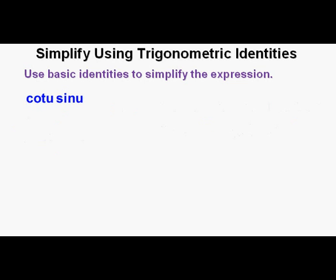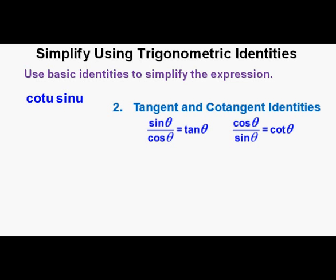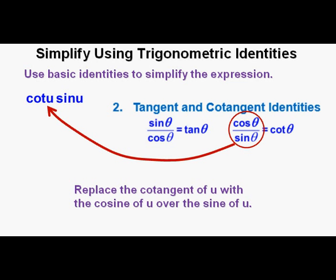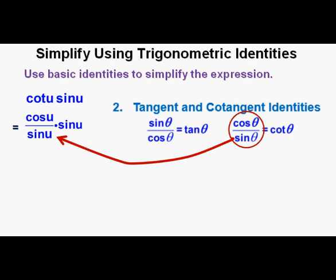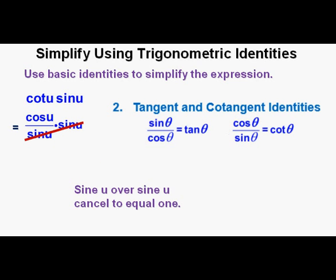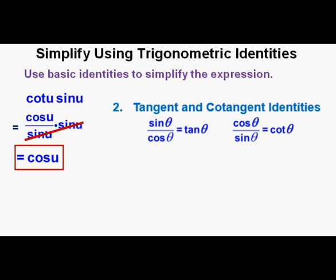Next problem. Use basic identities to simplify the expression: cotangent u times sine u. The basic strategy is to convert everything we can into sine and cosine and see if we can simplify from there. We go to our cotangent identity and replace cotangent u with cosine u over sine u. We now have cosine u over sine u times sine u. Sine u over sine u cancels to equal 1, and we bring down what's left — cosine u — which we box in as our correct answer.